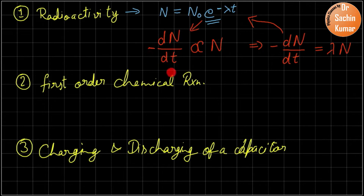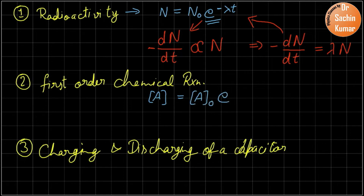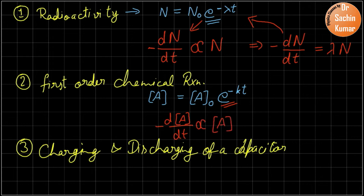The second example is a first order chemical reaction, which is similar to radioactivity. The concentration of chemical A equals the initial concentration of A times e raised to the power minus kt. Here also the exponential works the same way — at the back end the change in concentration of A is proportional to the concentration A, and we simply introduce a constant k and solve.